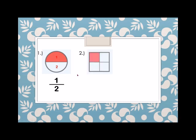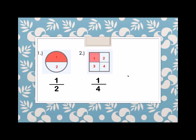Number 2: we have a square divided into 4 parts. So we have 1 shaded. So the number on top is 1. And the denominator is 1, 2, 3, and 4. So the denominator is 4.